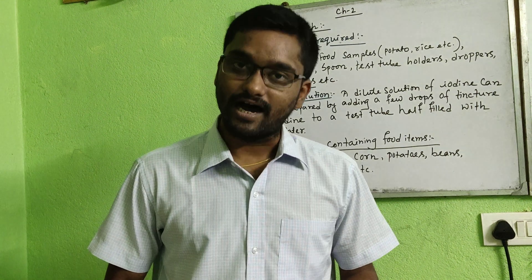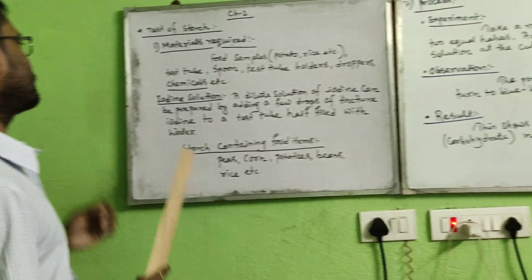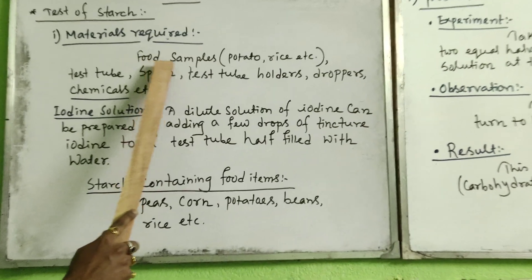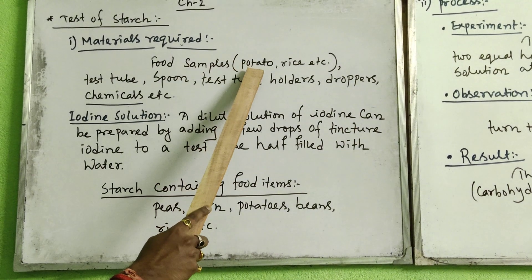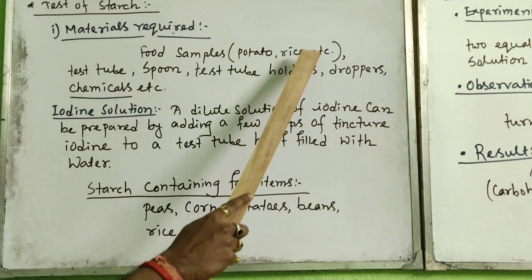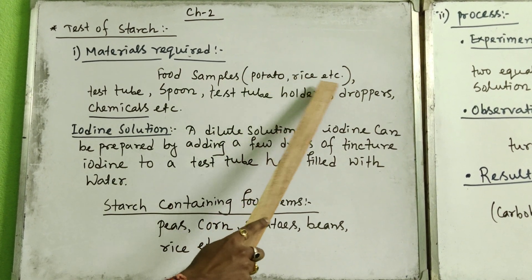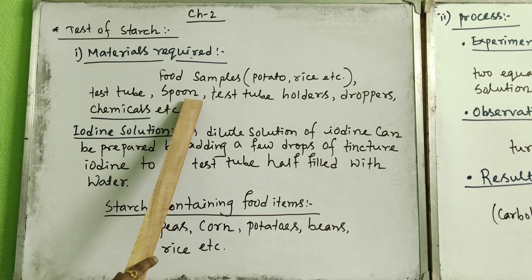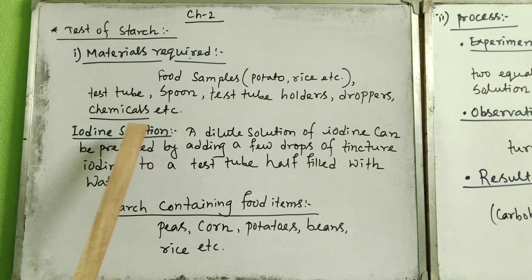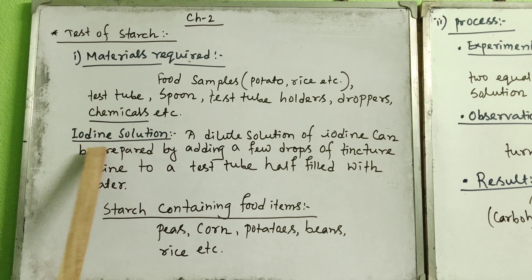Let's get to the main point: the test for starch. First, the materials required. You need food samples like potato and rice, which are rich in starch. You also need test tubes, a spoon, a test tube holder, a dropper, and chemicals — specifically iodine solution, which is highly required.